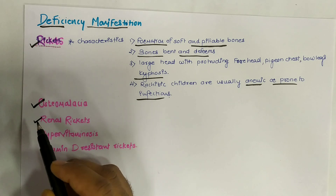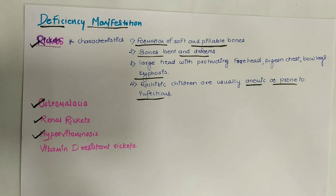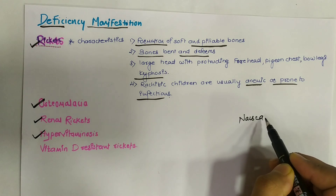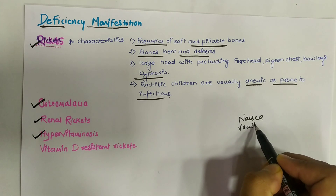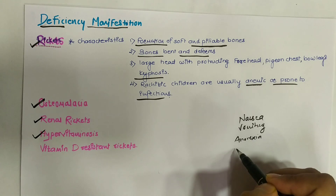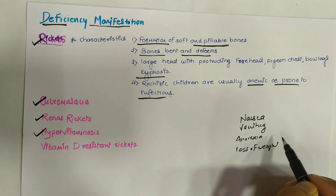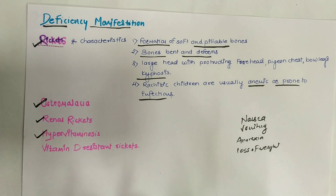Excess vitamin D in the body causes hypervitaminosis D. The early symptoms include nausea, vomiting, anorexia, and loss of weight. These are the characteristic features of hypervitaminosis D.